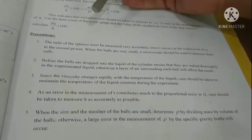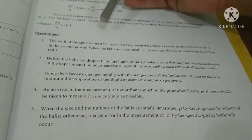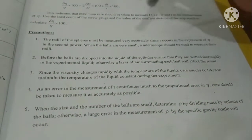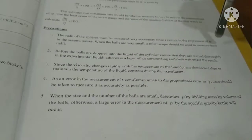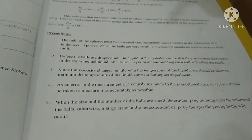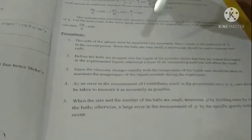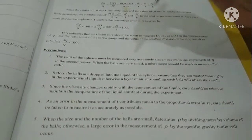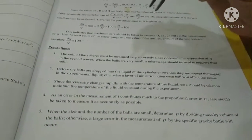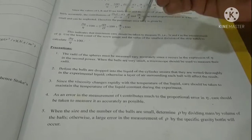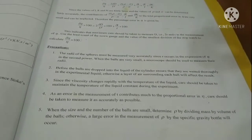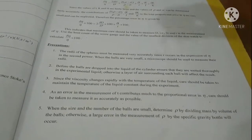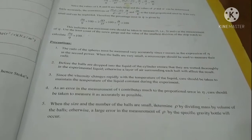We will discuss the precautions we have to keep while performing the experiment. First is that the radius of the sphere should be taken with utmost care because it comes in terms of R square in the formula of eta, so it will increase the error if we make any mistake. Secondly, before the balls are dropped in the liquid, they should be thoroughly wetted in the experimental liquid so that there is no air in between. Third is that because viscosity changes with temperature, we should maintain a constant temperature while performing the experiment.